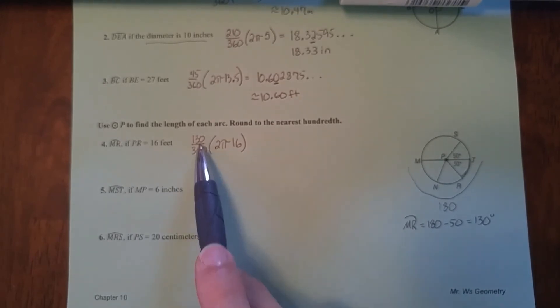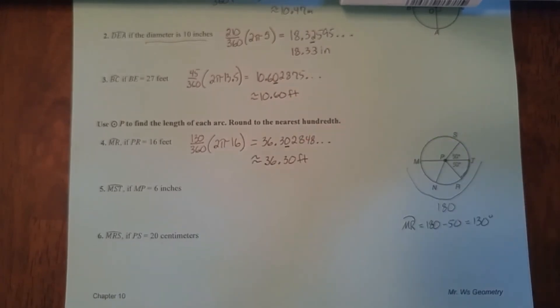Let's set up the problem. Now we're given PR, and PR is a radius. So I can use that directly. Central angle, arc measurement, over 360. That's the percent of the circle, times the circumference, 2πR. Using π, we get that. Rounded to the nearest hundredth, 36.30 feet. Remember, we look at the hundredth and then look to the right. If it's five or more, it goes up. Since it's not, it stays the same.